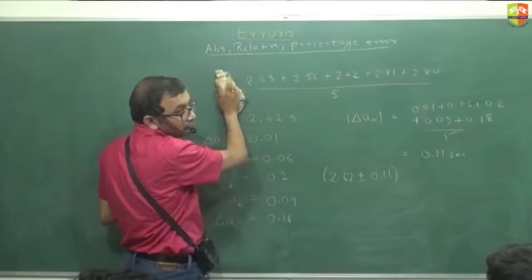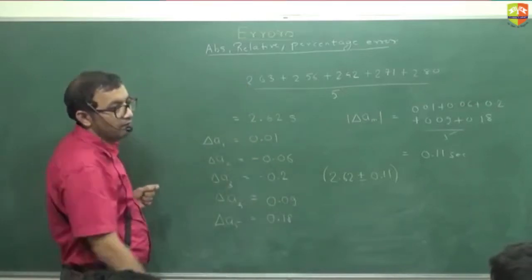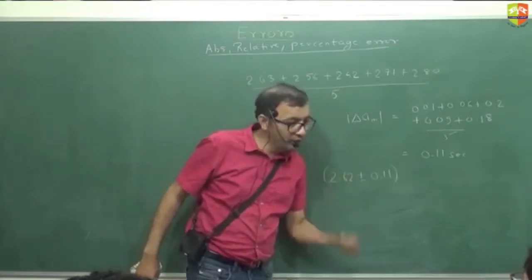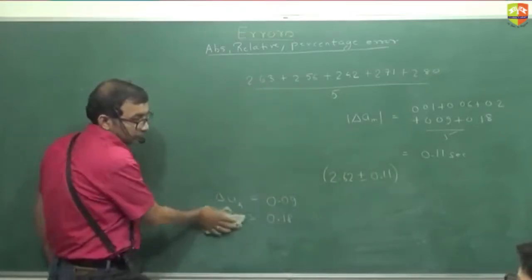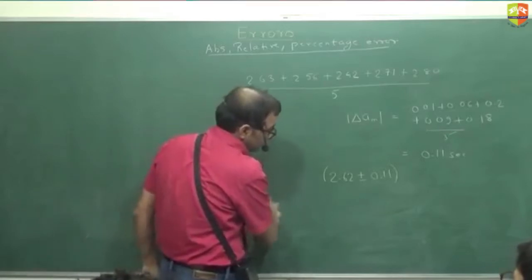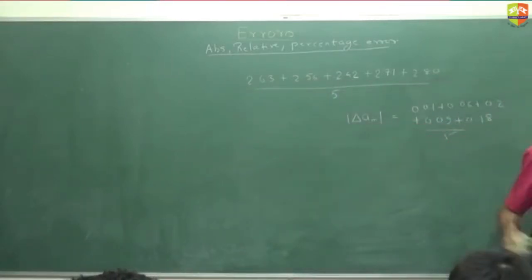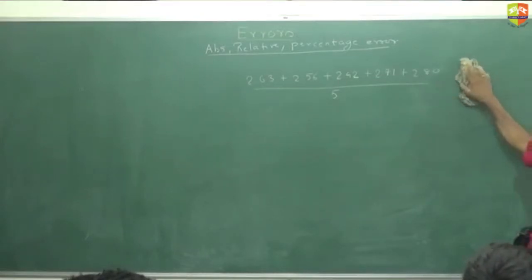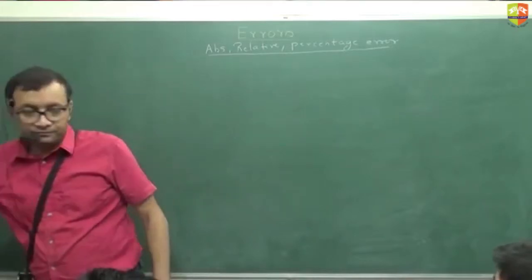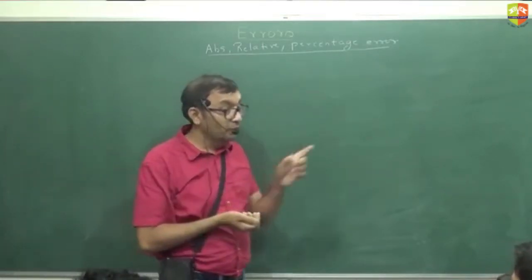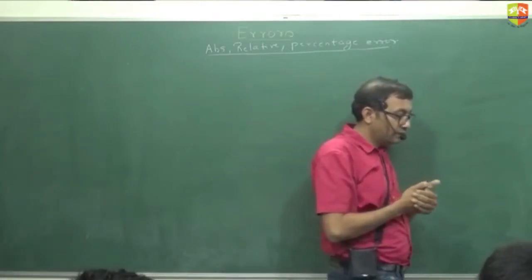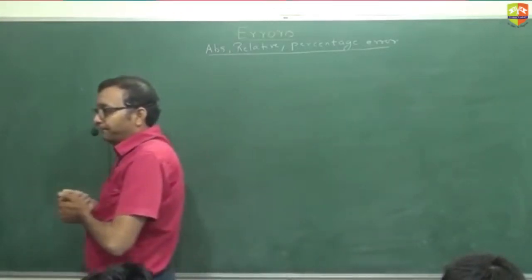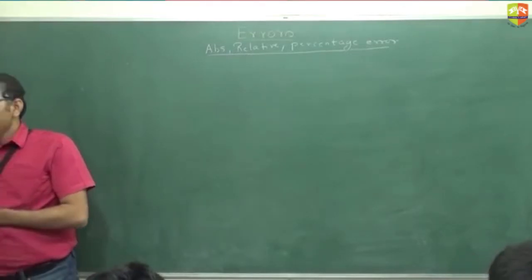The absolute error is 0.11. Relative error is 0.11 divided by the true value 2.62. We round down to two decimal places — delta a_mean divided by a is 0.04. Discard the third decimal point.